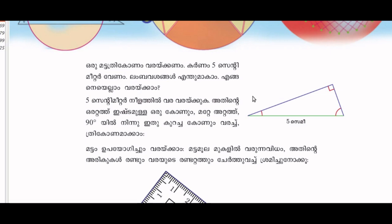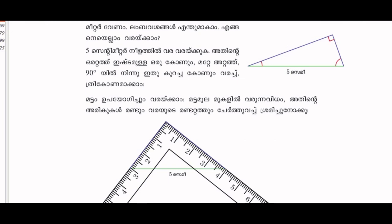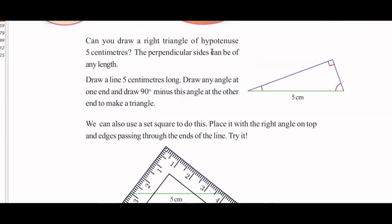This is the right triangle; the hypotenuse is 5cm. The perpendicular side can be of any length. Now, this is the hypotenuse. This is the right triangle opposite. This is the hypotenuse — this is the opposite angle of 90. If we get 90, the sum of 3 angles is 180. If we get 90, we get 90.